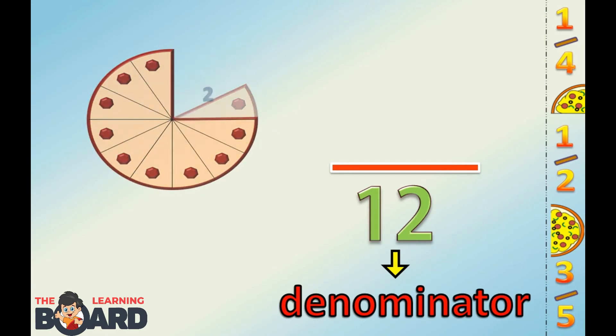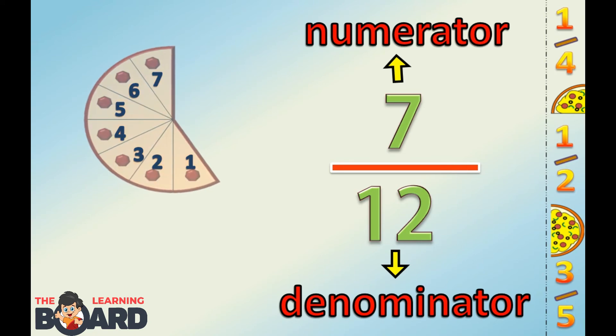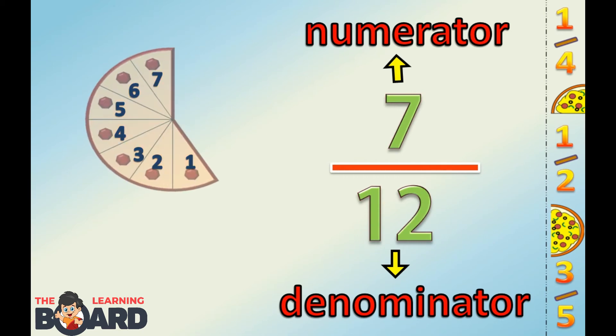As you ate five slices, seven slices are left. Seven will be the numerator. How much of this cake is left? That's right. Seven twelfths of the cake is left now.